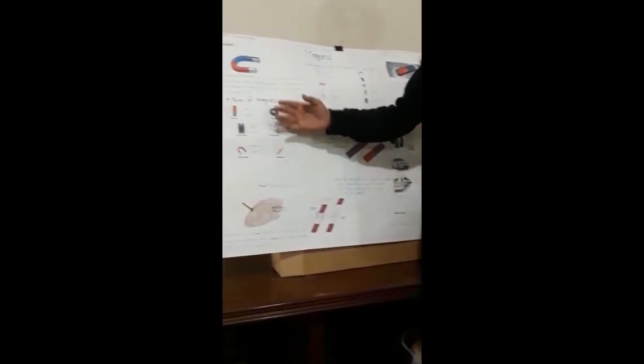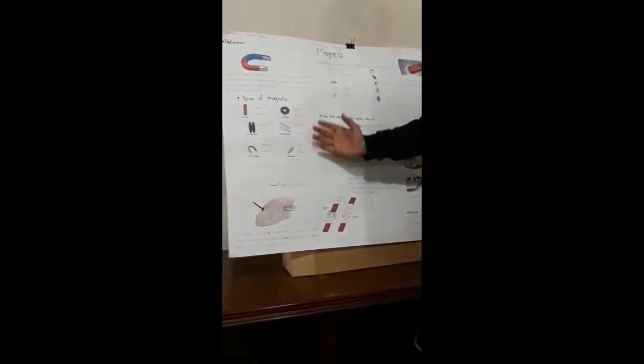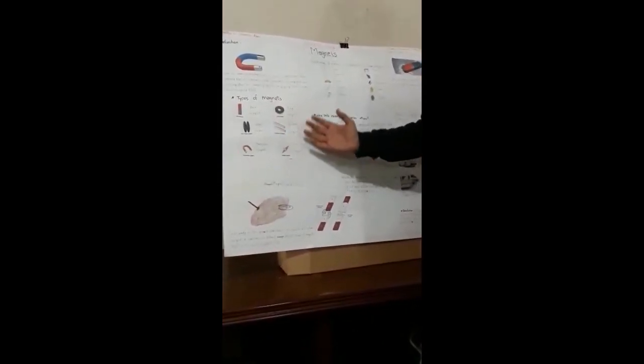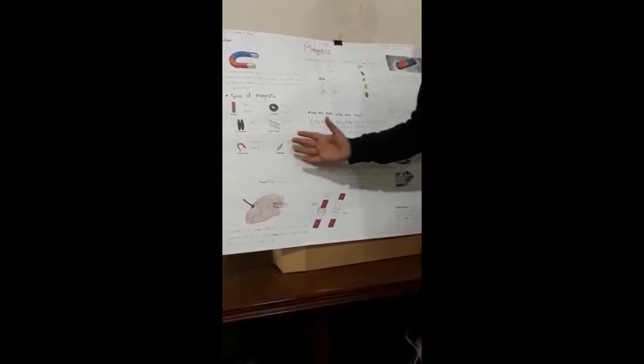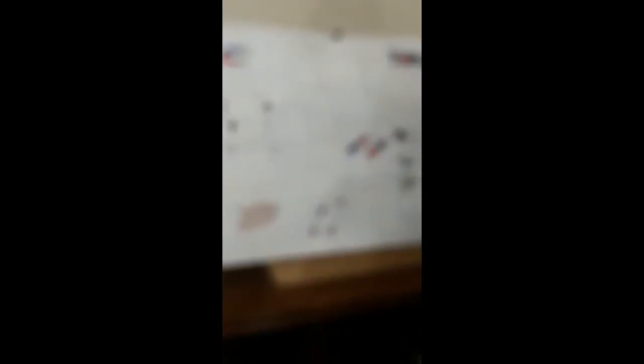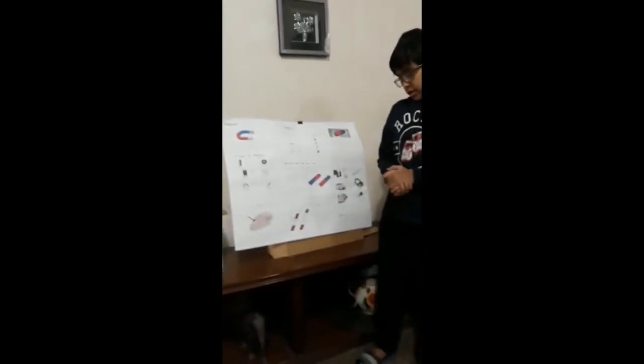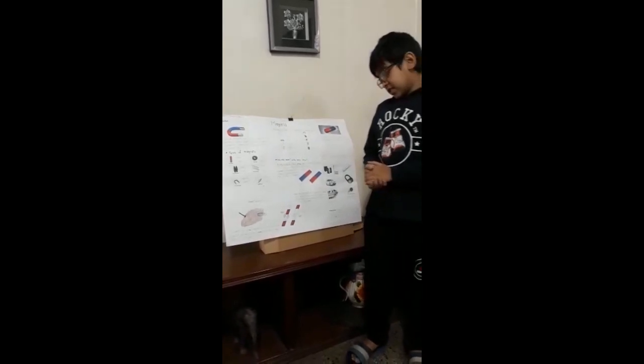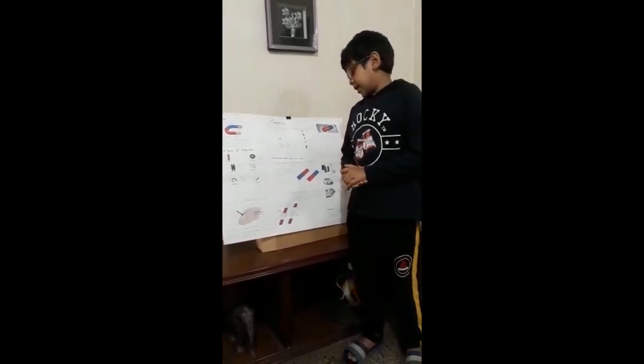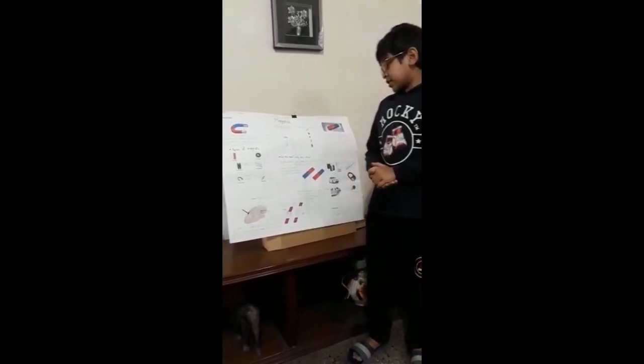There are types of magnets, for example bar, ring, oval, cylinder, horseshoe, and needle magnets. Magnets can also be found naturally in the ground. Lodestone is an example of a natural magnet.